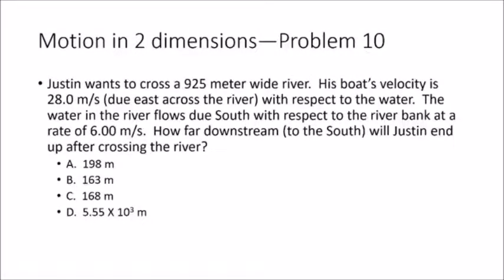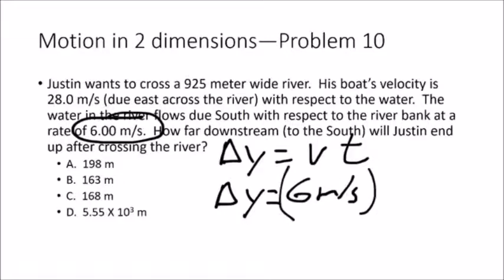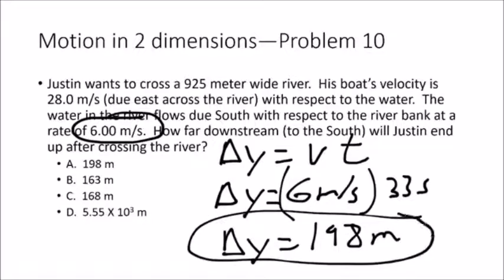Problem ten asks how far south Justin ends up after crossing the river. The southward movement depends entirely on the southward velocity, which is a constant 6 meters per second. Using delta y equals Vt: delta y equals 6 times 33 seconds, giving 198 meters to the south — answer A.